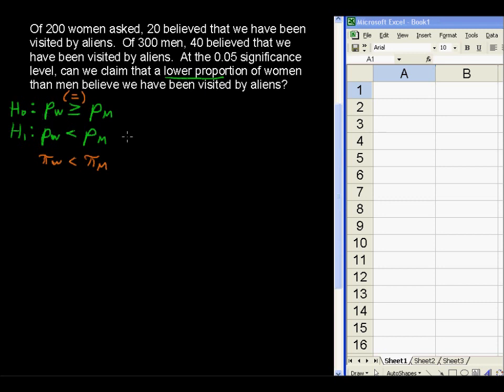In words, that is, the proportion of women who believe we have been visited by aliens is less than the proportion of men who believe we have been visited by aliens. So once we have our hypotheses set up, we're going to find the p-value.